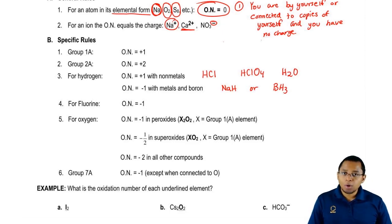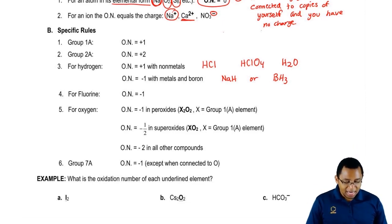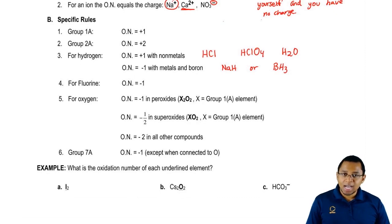Fluorine is always minus one no matter what. Oxygen on the other hand can be a pain because oxygen has various oxidation states based on what kind of compound it's in. For oxygen when it's a peroxide, it's going to be negative one.